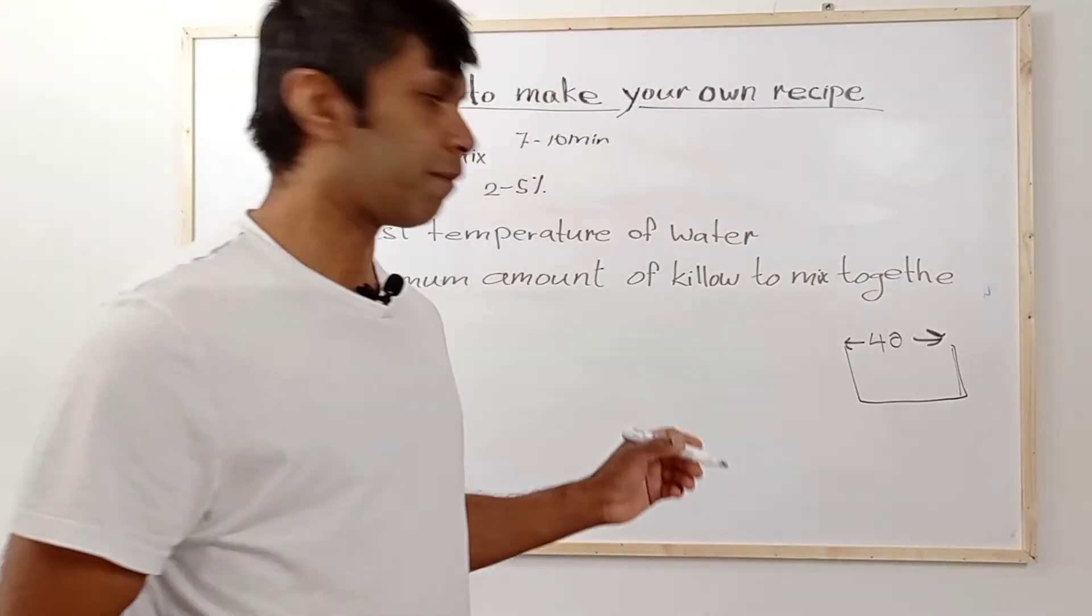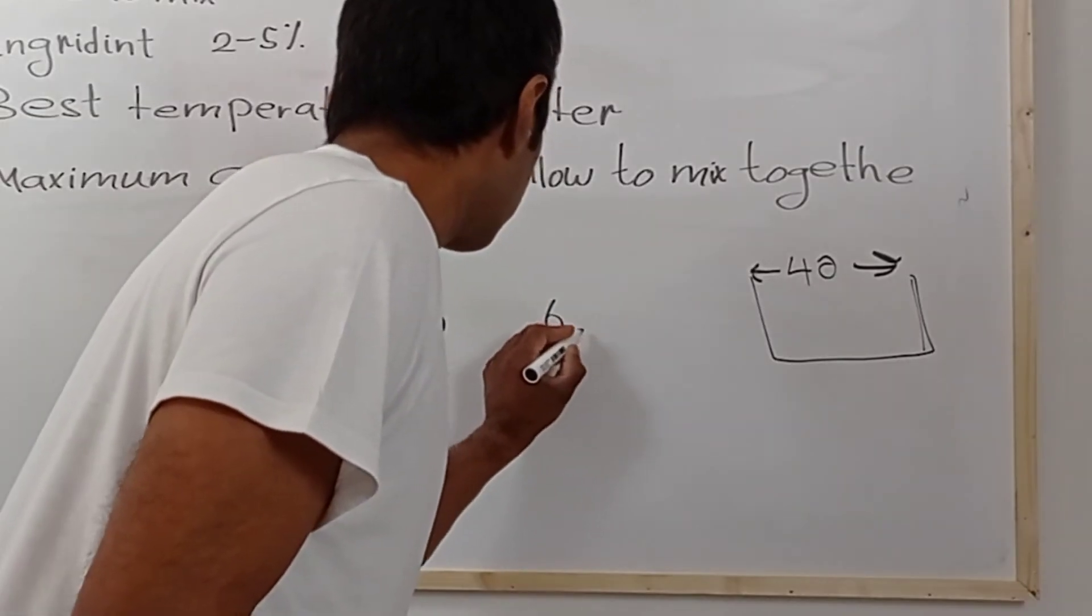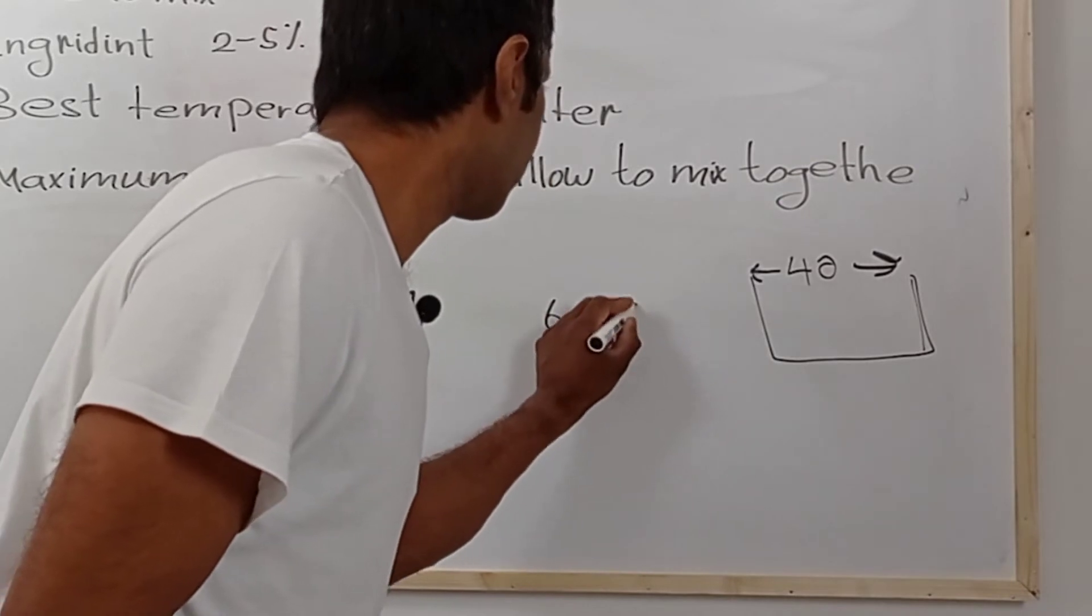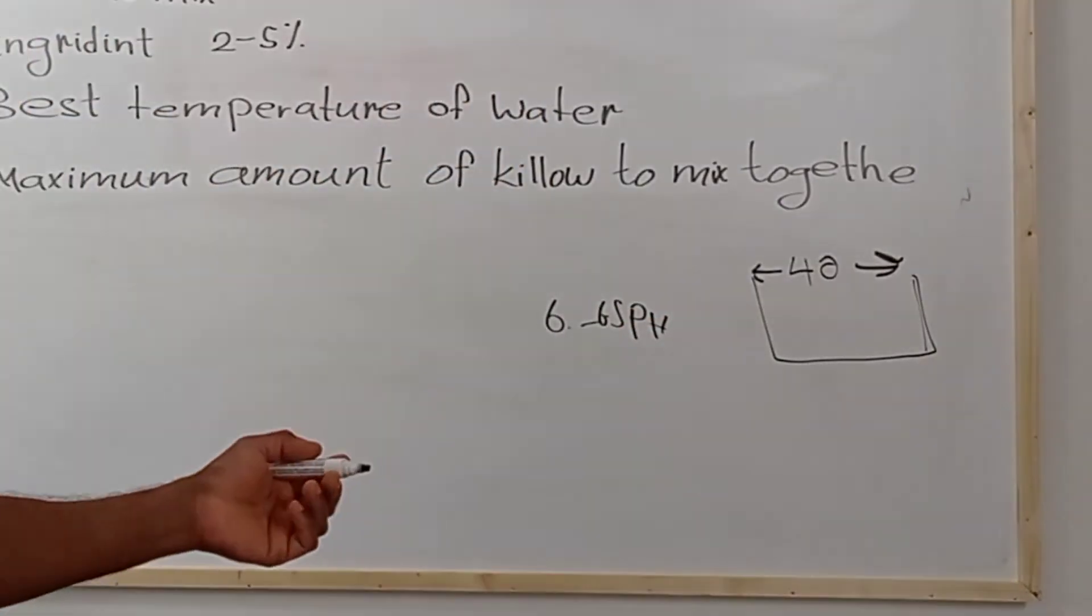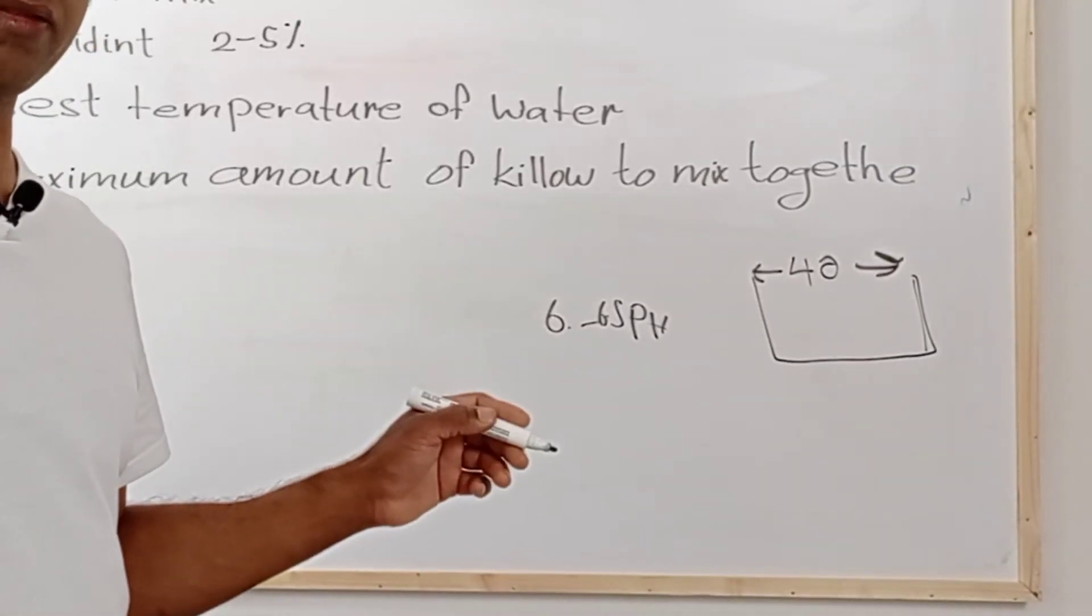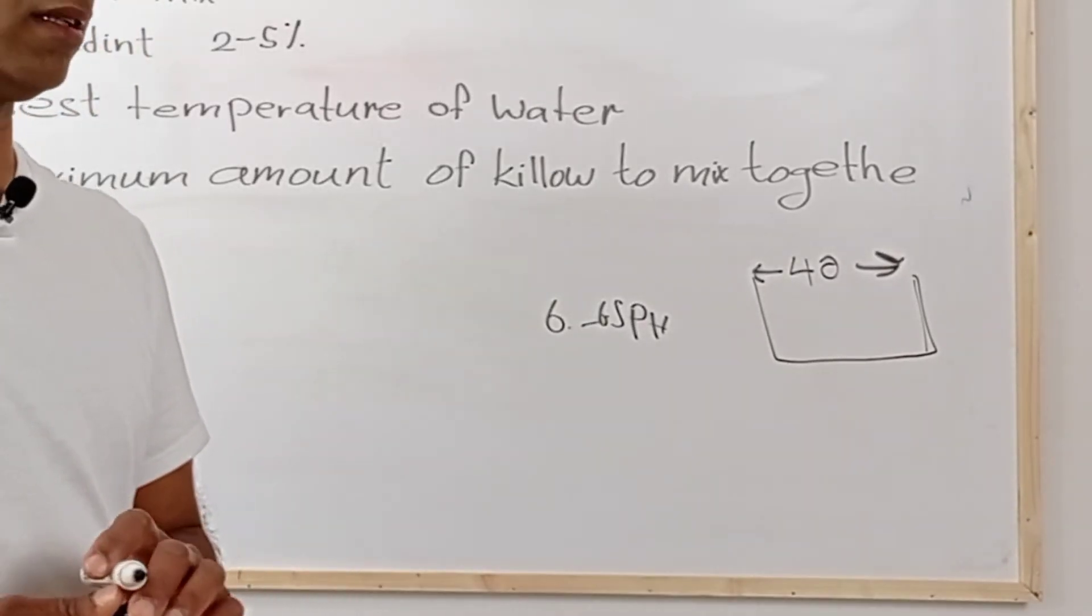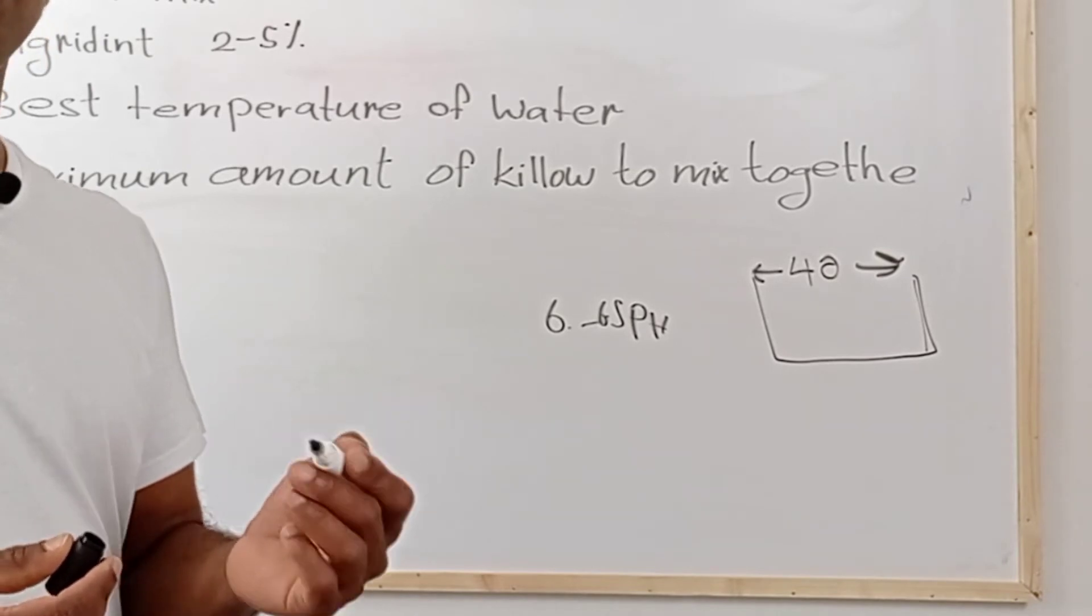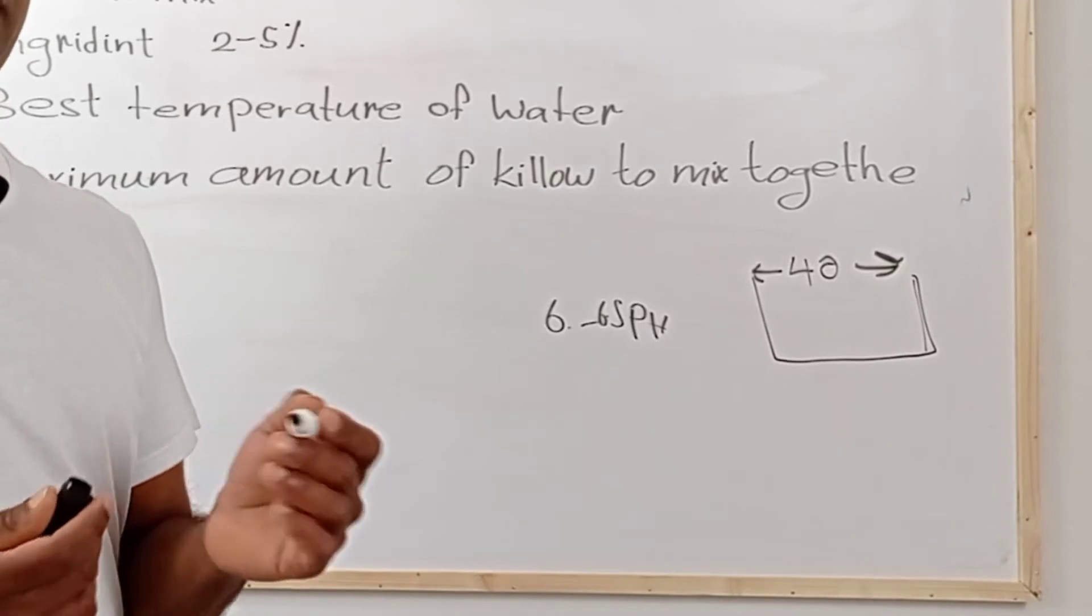Because all wheat flour has 6 to 6.5 pH, a little bit high pH. But normal wheat flour has 5 to 5.5 pH. So after you mix normal wheat flour with water and test step by step, the pH will become 4 or 3.9 or 4.2 in this area.